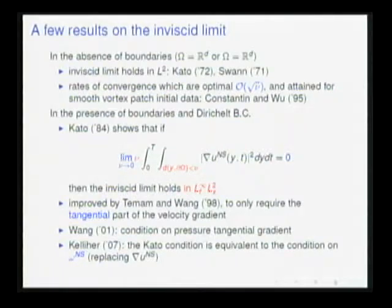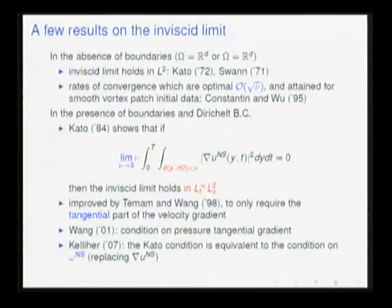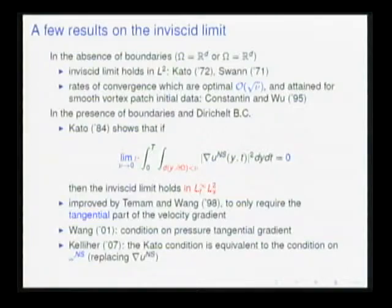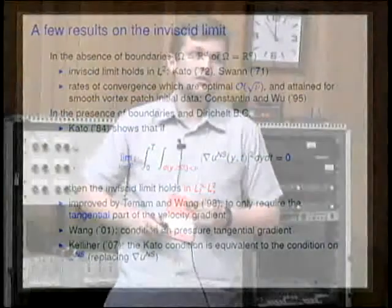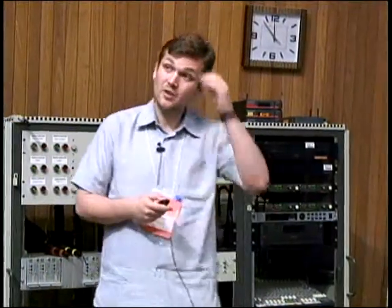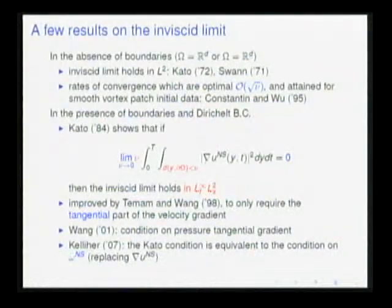What happens if you do have boundaries? In general, as far as I know, the problem is open, but we have a lot of sufficient conditions for the inviscid limit to hold. In particular, as Elena just mentioned, there is the result of Kato, which shows that if you multiply the dissipation rate of energy only in a boundary layer of width proportional to nu, and this goes to zero as nu goes to zero, then the inviscid limit holds. When I say the inviscid limit holds, I always mean it in L-infinity in time, L2 in space.